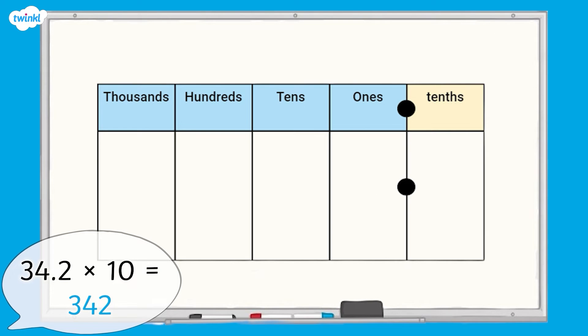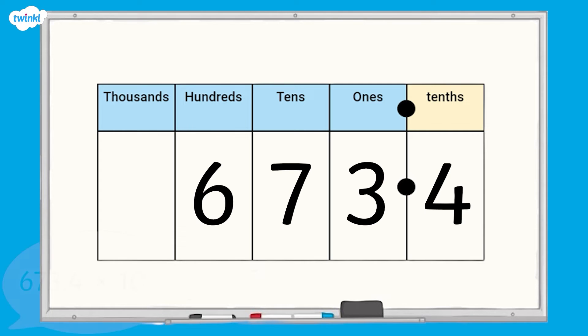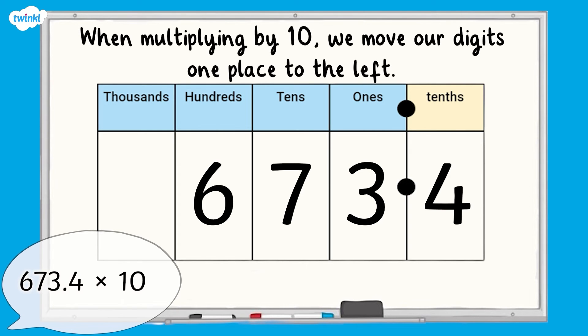Now it's your turn. Here is the number 673.4. I would like you to have a go at making 673.4 ten times the size using the place value chart to help you. Pause the screen here whilst you have a go.